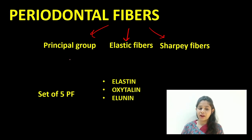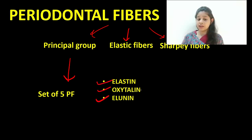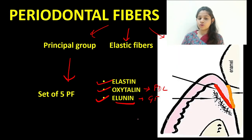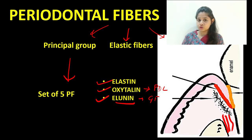The principal group is a set of five periodontal fibers. The elastic group consists of three: elastin, oxytelin, and elaunin. Out of these, oxytelin is majorly present in the PDL and was first described by Fulmer, whereas elaunin is more or less present in the gingival fiber group. These elastic fibers are present in a vertical direction in the periodontal ligament space and do not have a specific function but help in facilitating blood flow.